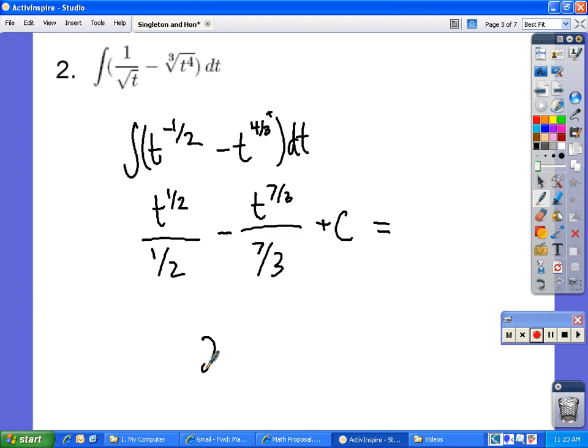When simplified this comes out to 2t to the 1 half minus 3 sevenths t to the 7 thirds plus c.